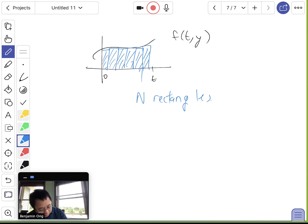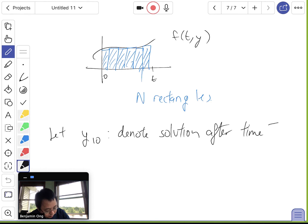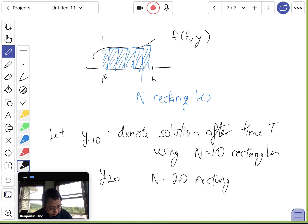So let's denote, let's let y10 to denote the solution after time capital T. And suppose this uses n equals 10 rectangles. And suppose we can do the same thing. We can compute a y20 and that's the solution using n equals 20 rectangles. And we can keep going, create n equals 40.